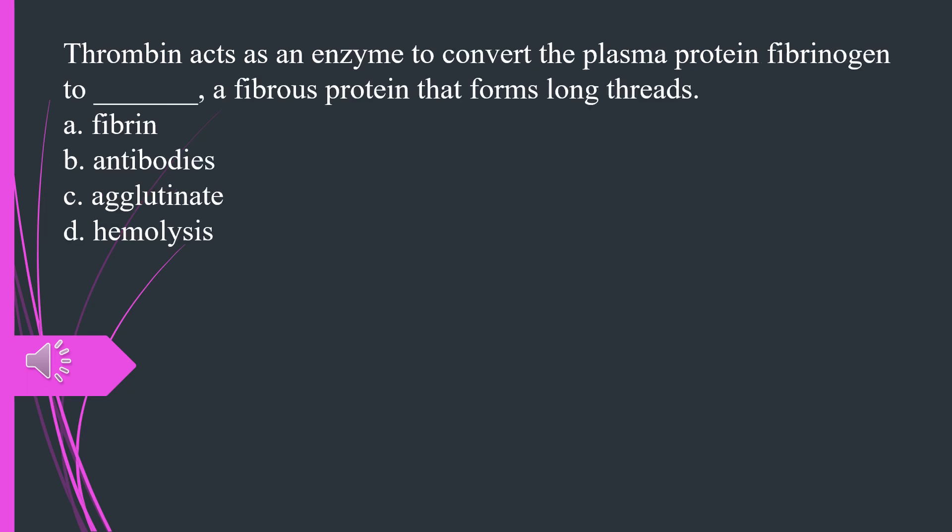Thrombin acts as an enzyme to convert the plasma protein fibrinogen to what, a fibrous protein that forms long threads. A. Fibrin B. Antibodies C. Agglutinate D. Hemolysis. The answer is A, fibrin.